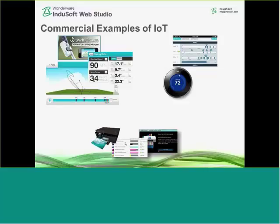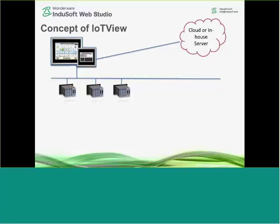Another IoT example is with a printer. Many of you have gotten the message that pops up saying you're out of ink, and you'll hit OK or cancel and do nothing. Then when you need your printer the most, you'll be out of ink. That's kind of exactly what the idea of the Internet of Things addresses — acting on that information rather than ignoring it.